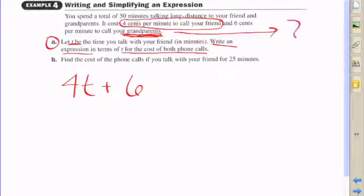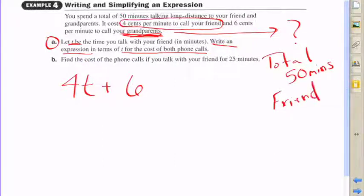That's important to note. So how do we represent the time that you talk to your grandparents? This is the tricky part. Since there is a total of 50 minutes, we're going to use that to represent the amount of time that we talk to our grandparents, and I'm going to show you how that's going to work in a second.